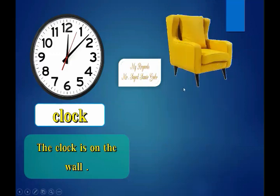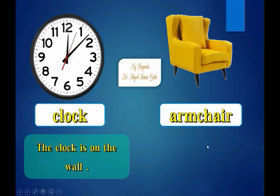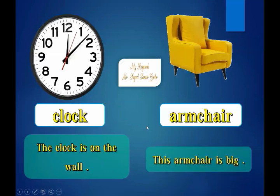Look at the picture — is this a chair? No. It has armrests, so it's an armchair. Armchair. Yes. Who can give me an example? Excellent — this armchair is big.